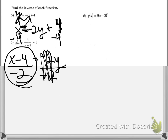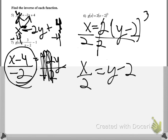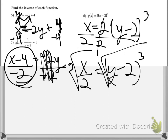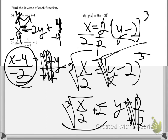For number six, put x on this side, pull the switch: x equals 2 times y minus 2 to the third. Divide by the outer 2, so x over 2 equals y minus 2 to the third. Then take the cube root of both sides — the cube root and the third power undo each other, leaving y minus 2 equals cube root of x over 2. Add 2 to both sides: the inverse is cube root of x over 2, plus 2.